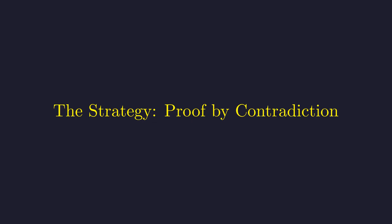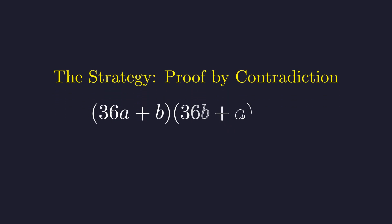We will approach this using a proof by contradiction. Let's assume the statement is false. We assume the expression is equal to 2 to the power of k for some non-negative integer k. Since both factors are positive integers and their product equals 2^k, by the fundamental theorem of arithmetic, every prime factor of each factor must be 2. Therefore, each factor must itself be a power of 2.